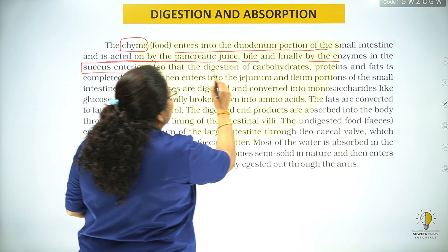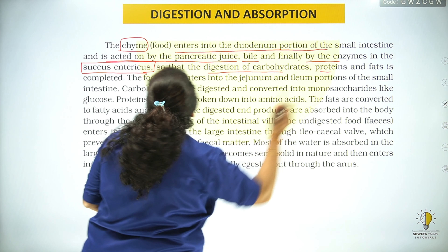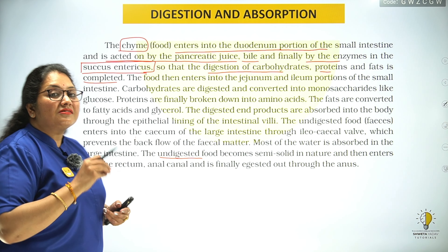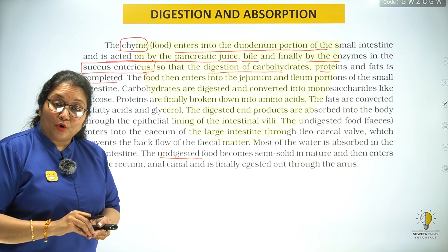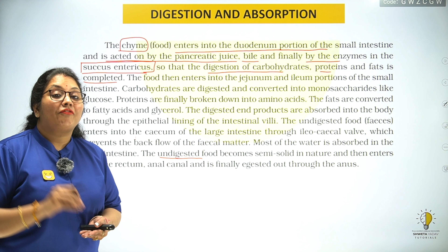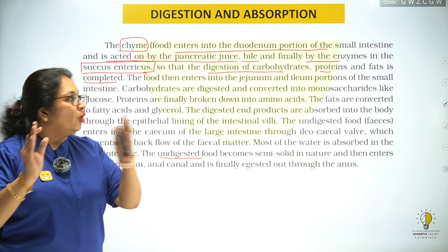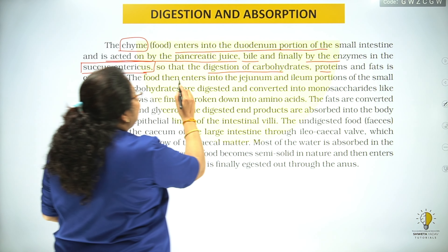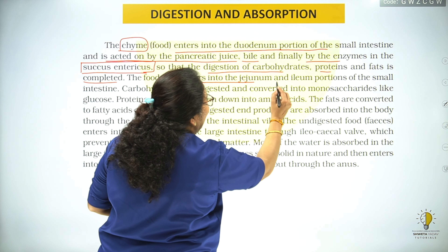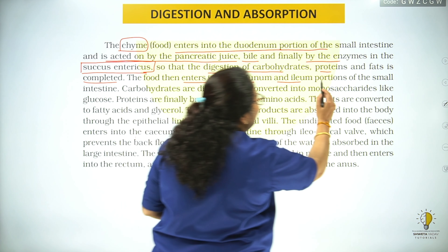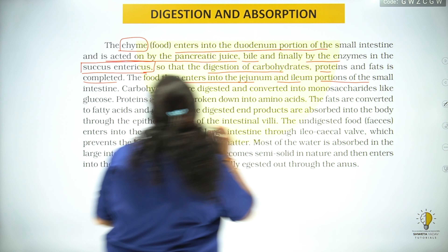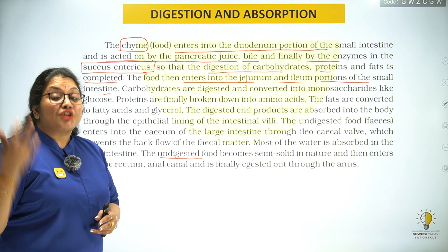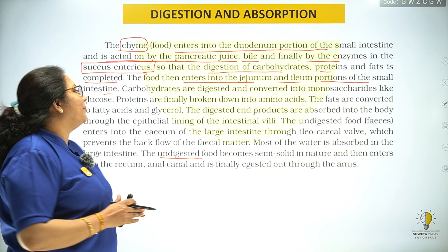So that the digestion of carbohydrates, proteins and fat is completed. The food then enters into the jejunum and ileum portions of the small intestine. Jejunum ke baad food ileum mein jata hai.